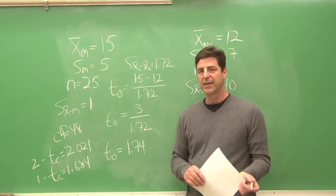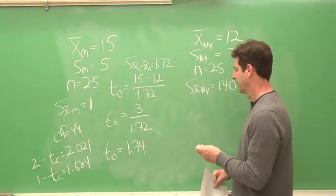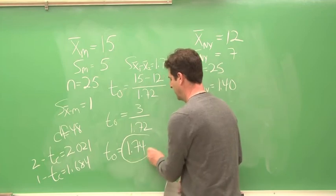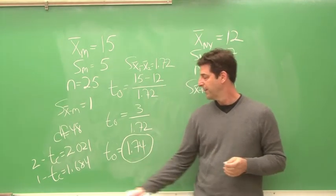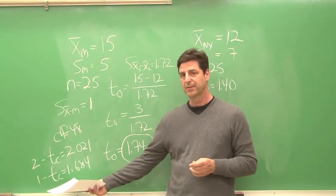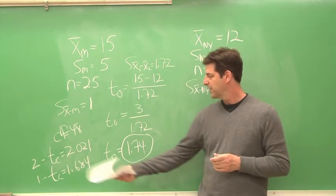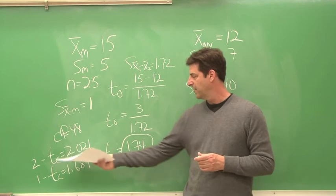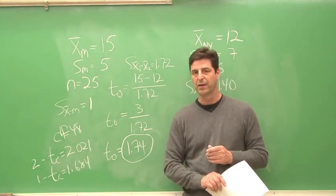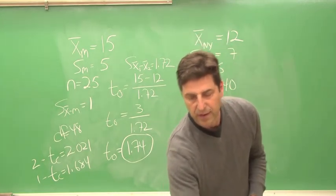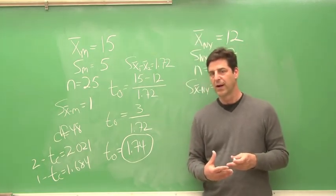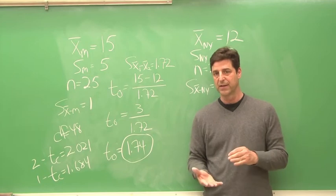Now, something interesting is happening. Our observed T value is going to be statistically significant if we are using a one-tail test. If we are using a two-tailed test, our observed T value is smaller than our critical T value, and it wouldn't be statistically significant. This is a little bit of the controversy around whether you use a one-tailed test or a two-tailed test.